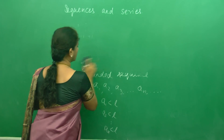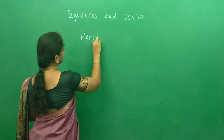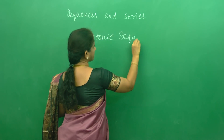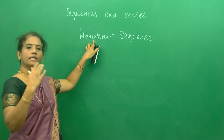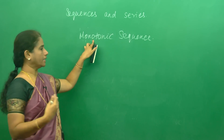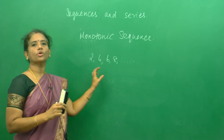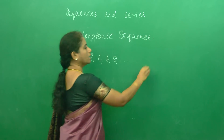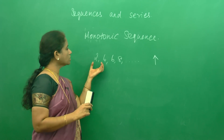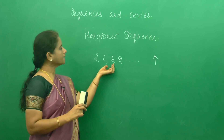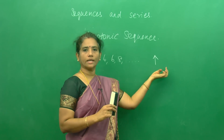The very important sequence we are going to see now is a monotonic sequence. What is a monotonic sequence? Monotonic means either it can be increasing or it can be decreasing. For example, the sequence 2, 4, 6, 8, etc. is a monotonic sequence — specifically a monotonic increasing sequence — because each term is more than the previous term. So each term goes on increasing.